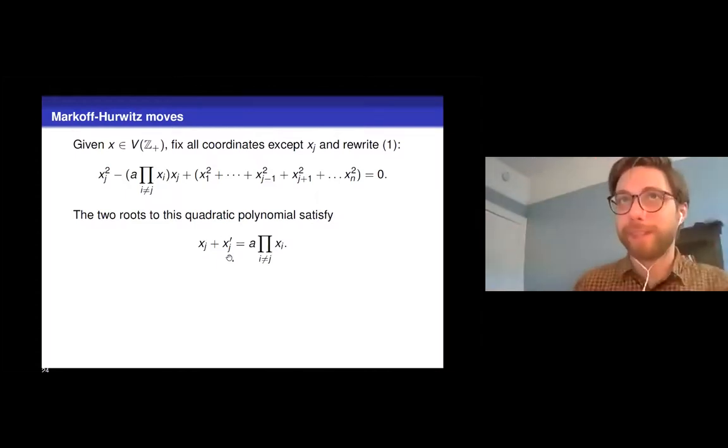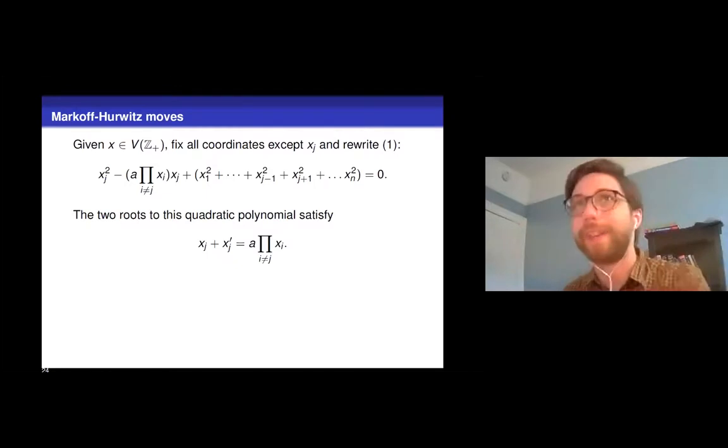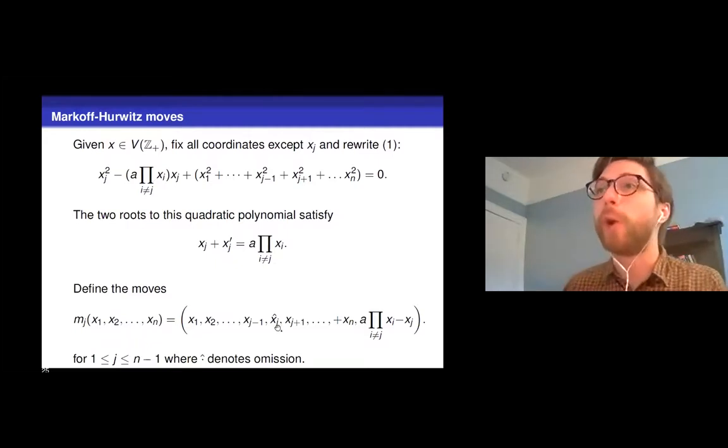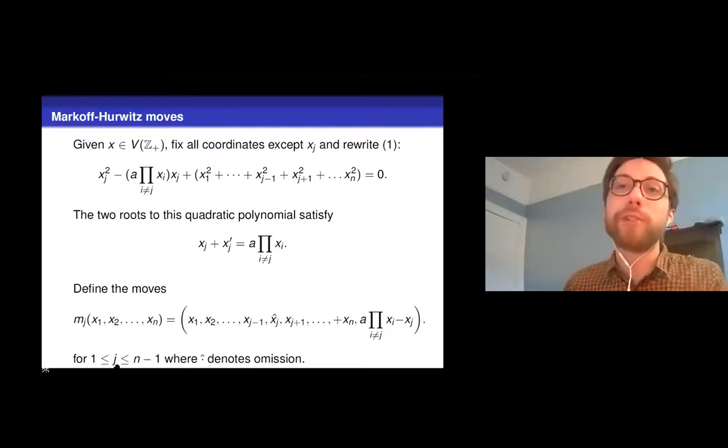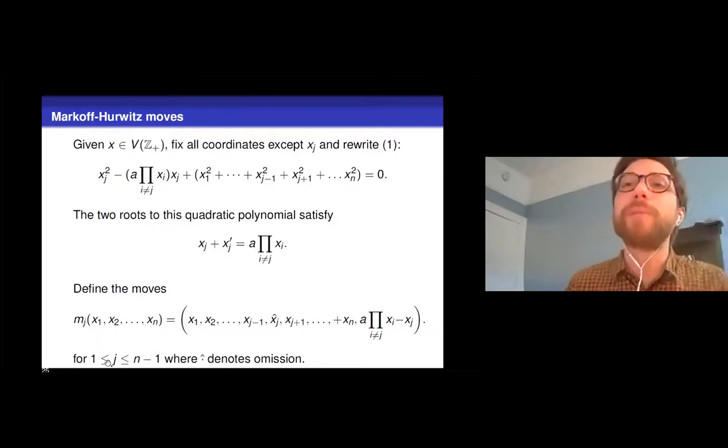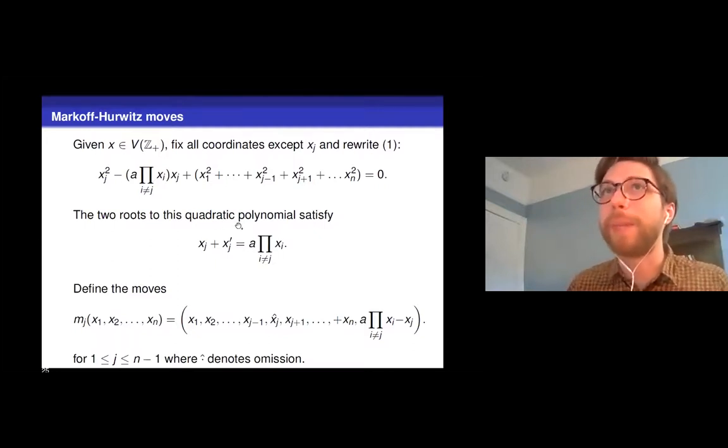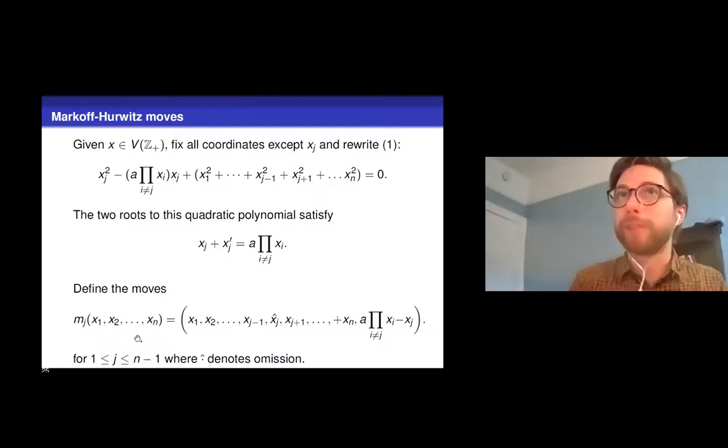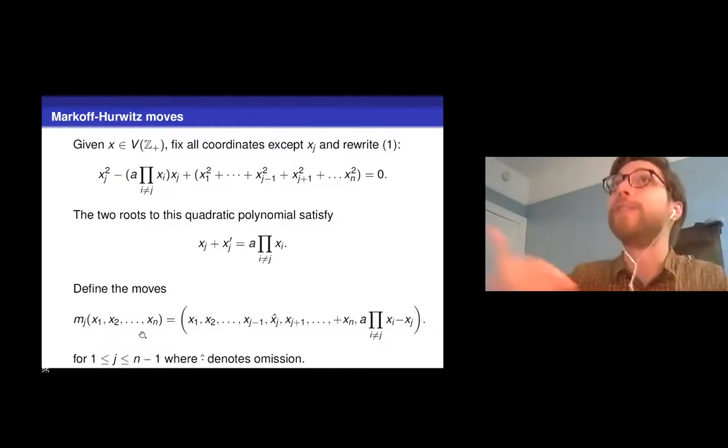And you stare at this long enough and you realize, oh, wait a second. We know the right-hand side, right? a is fixed. And we said we fixed the xᵢ's other than xⱼ to be the coordinates of some solution that we know. And then this xⱼ on the left-hand side, we know that also. And then there's an unknown here. There's an xⱼ' that we could solve for. So if the xⱼ' is different from xⱼ, what this gives us now is a way to take a solution and produce a new solution that also satisfies the Markoff-Hurwitz equation. So we define these moves here. Again, we'll call these the Markoff-Hurwitz moves.